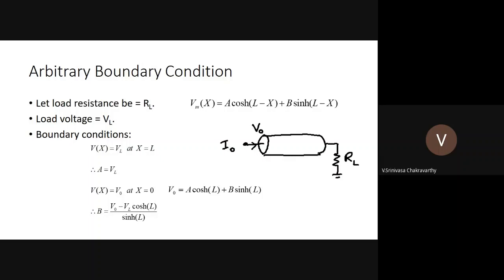Assume the loading resistance is R_L and the voltage distribution is of the form A·cosh(L−X) + B·sinh(L−X). The boundary conditions are unknown because we don't know the current and voltage at the far end — we only know their ratio V_L / I_L = R_L. So we assume the voltage at the far end is V_L and the voltage at the input mouth is V_0. Plugging in at X = L, the sinh term becomes zero and cosh becomes one, so V_L = A.